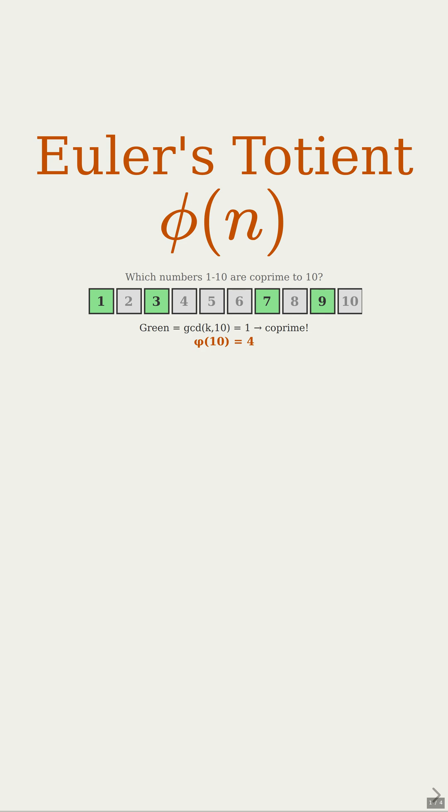How many numbers from 1 to n are complete strangers to n, sharing no common factors at all? Formally, we want to count the integers between 1 and n whose greatest common divisor with n is 1. So those are the numbers that are co-prime to n, right?